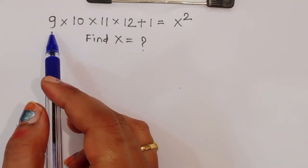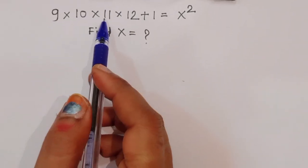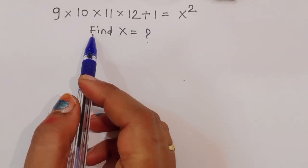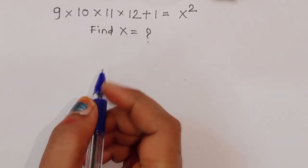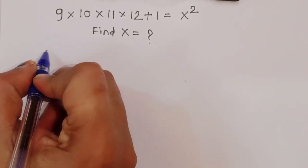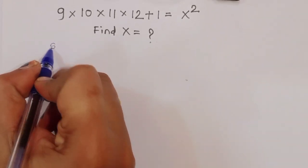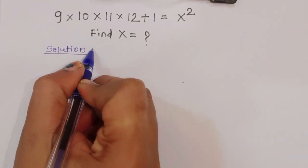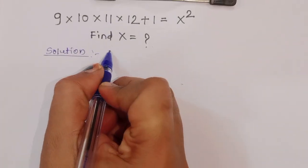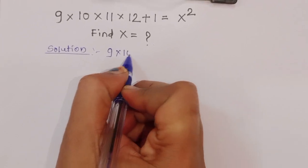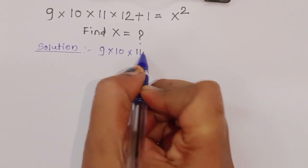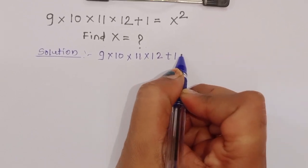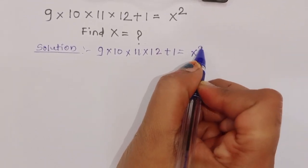The question is: 9 times 10 times 11 times 12 plus 1 is equal to x squared. We have to find out the value of x. Let's see the solution.